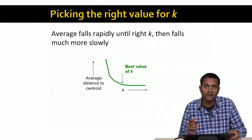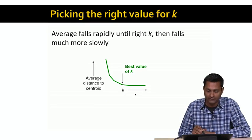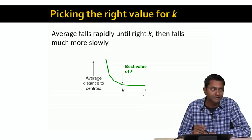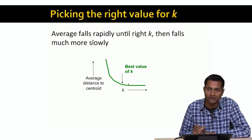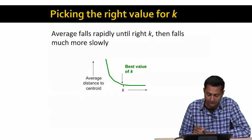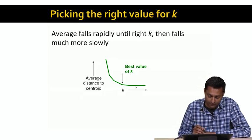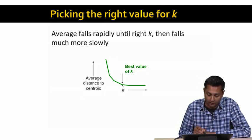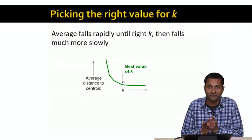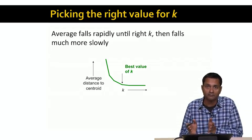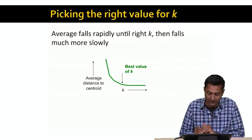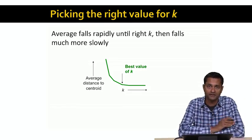We can see this clearly if we plot a graph where the x-axis is k, the number of clusters, and the y-axis is the average distance to the centroid. As k increases, the average distance keeps falling, but at some point there's a knee in the curve and the average distance falls only very slowly. The obvious thing to do is to pick a value of k that's close to the knee of the curve, where you get a fairly low average distance to the centroid without too high a value of k.